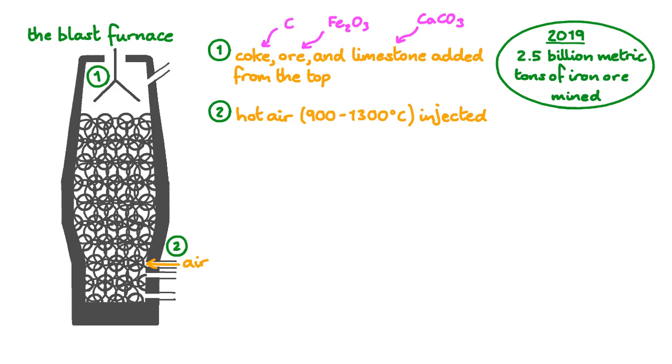In the next step, hot air between 900 and 1300 degrees Celsius is injected into the bottom of the furnace. It's these blasts of hot air that give the blast furnace its name. Oxygen from the air quickly reacts with the solid carbon in the coke, producing carbon dioxide gas, which rises up the furnace. This and other exothermic reactions raise the temperature at the bottom of the furnace to between 1,500 and 2,000 degrees Celsius.